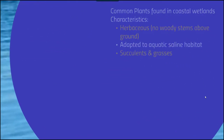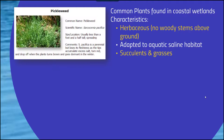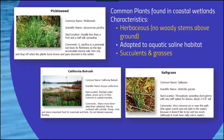Plants are also an interesting and diverse assemblage within these regions. Common plants found in coastal wetlands are herbaceous — no woody stems above the ground — making them lighter so they don't need an extensive or solid foundation. They're adapted to aquatic saline habitats and often consist of succulents and grasses. Pickleweed is a great example commonly found in San Diego. Without a woody stem, they deal better with muddy or less solid soil. Another commonly found plant is California bulrush, and saltgrass.